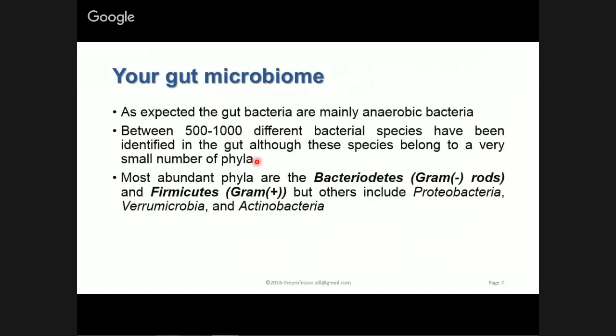As you'd expect, the gut bacteria are mainly anaerobic — in theory there is no air for these bacteria in your gut. We think we have somewhere on the order of about 500 to 1,000 different bacterial species that live within the gut.